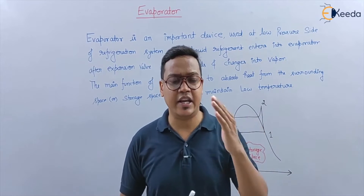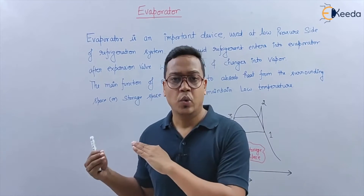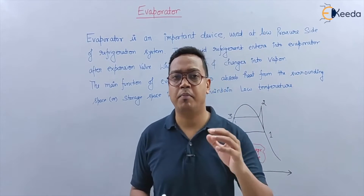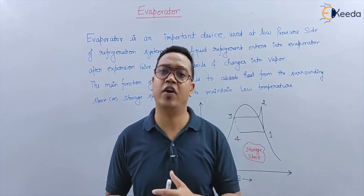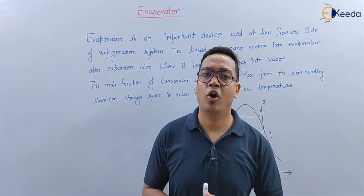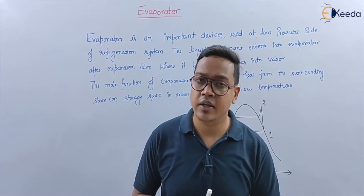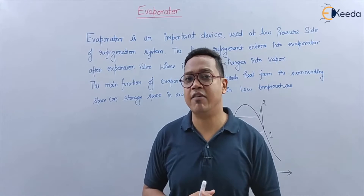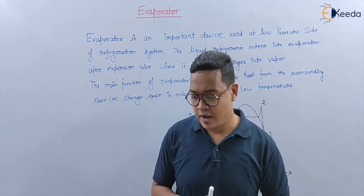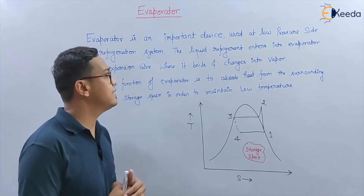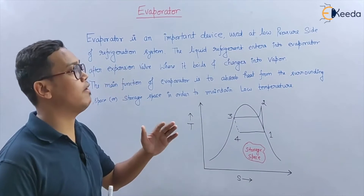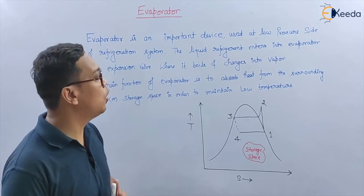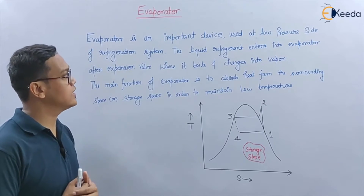Condenser, evaporator, and cooling tower — these all are parts or equipment of the refrigeration system. Also, expansion devices, that we will see later. So let's see the evaporator. The evaporator is an important device used at the low pressure side of the refrigeration system.